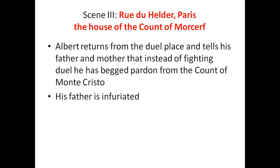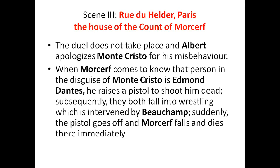Albert returns home from the duel and tells his father and mother that instead of fighting, he begged pardon from the Count of Monte Cristo. After hearing this, his father the Count of Morcerf is furious. The duel does not take place. Albert apologizes to Monte Cristo for his misbehavior. When Morcerf comes to know that the person in the disguise of Monte Cristo is Edmond Dantès, he raises a pistol to shoot him. They both fall into wrestling, which is interrupted by Bouchamp. Suddenly the pistol goes off and Morcerf falls and dies immediately.